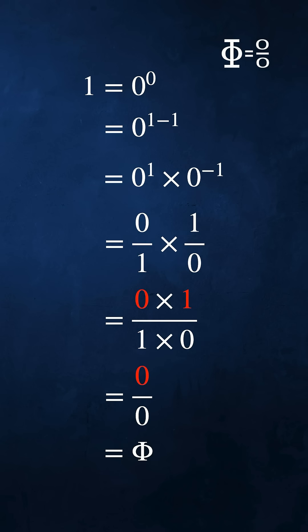0 times 1 equals 0. 1 times 0 equals 0. And 0 over 0 equals nullity. We've got the contradiction 1 equals nullity.